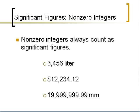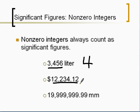The first part is non-zero integers. Non-zero integers always count as significant figures. So if we have four digits, there are going to be four sig figs in that value — you don't have to worry about any zeros. For a number with seven digits, that's seven sig figs. And for a number with no zeros to worry about, everything is significant — ten digits means ten sig figs.